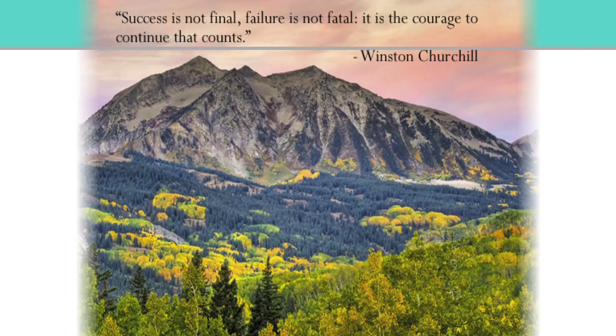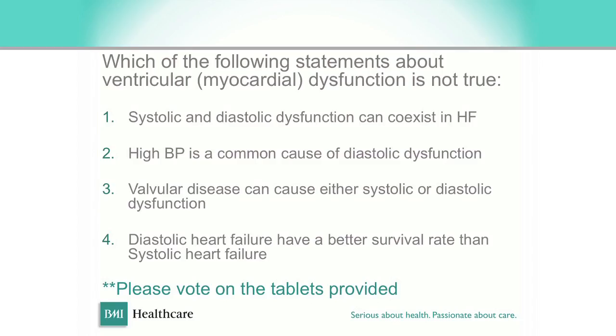So success is not final. Failure is not fatal. It is the courage to continue that counts. My final question: which of the following statements about ventricular dysfunction is not true? Systolic and diastolic dysfunction can coexist — yes, that's true. High BP is the commonest cause of diastolic dysfunction. Valvular disease can cause either systolic or diastolic dysfunction — yes. And diastolic heart failure has a better survival rate than systolic heart failure — that is absolutely wrong. Thank you very much.